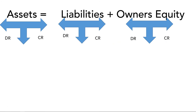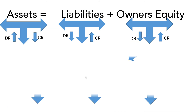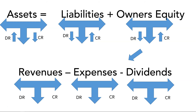Now let's go through the debit-credit framework for revenues and expenses. The increase in the value of an asset is denoted by a debit, decreased by a credit. Liabilities and owners' equity are just the opposite. Owners' equity is revenues minus expenses minus dividends. Revenues increase owners' equity, so revenues follow the same convention as owners' equity — they increase with credit and decrease with debit. Expenses and dividends are just the opposite: they increase with debit and decrease with credit.